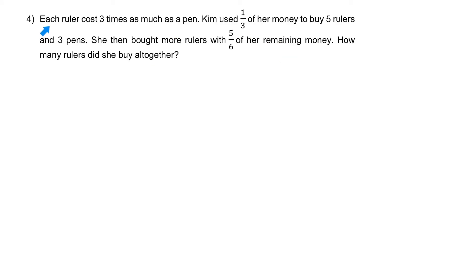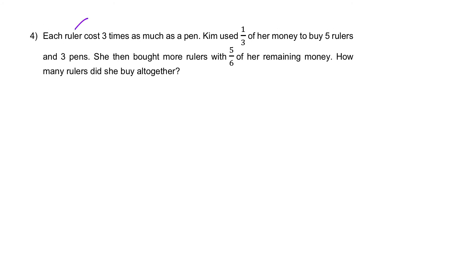Question 4: Each ruler costs three times as much as a pen. Kim used a third of her money to buy five rulers and three pens. She then bought more rulers with five-sixths of her remaining money. How many rulers did she buy altogether? From the first sentence: one ruler equals three units in cost, and one pen equals one unit. Next: Kim used a third of her money to buy five rulers and three pens.